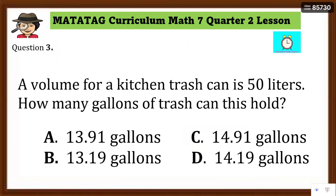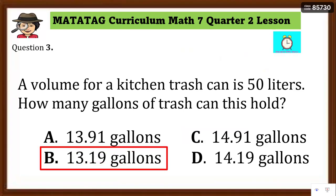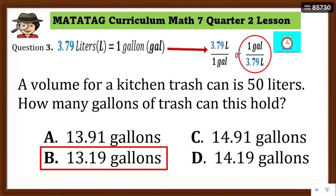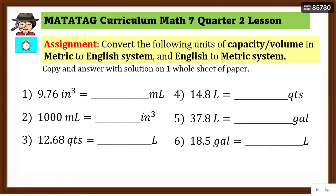Number 3: the answer is letter B, 13.19 gallons. The problem states the volume of a kitchen trash can is 50 liters — how many gallons can it hold? Using the unit fraction 1 gallon over 3.79 liters, 50 divided by 3.79 gives letter B, 13.19 gallons.